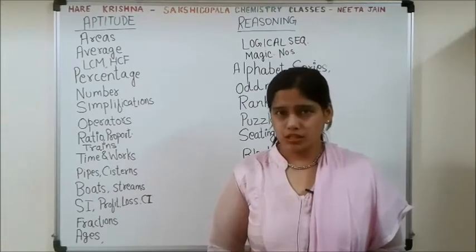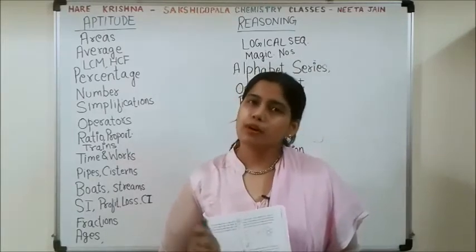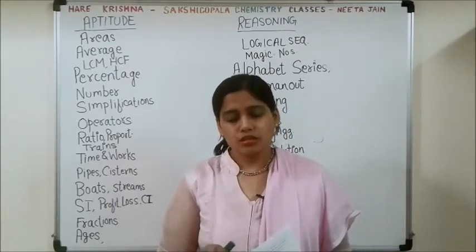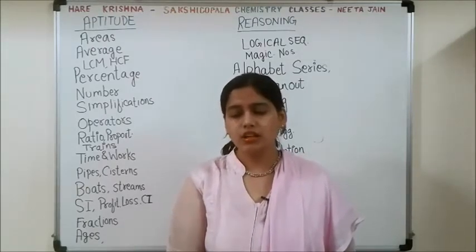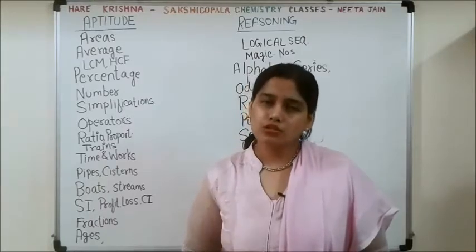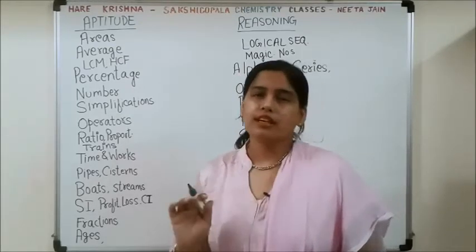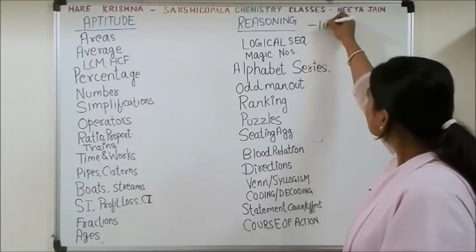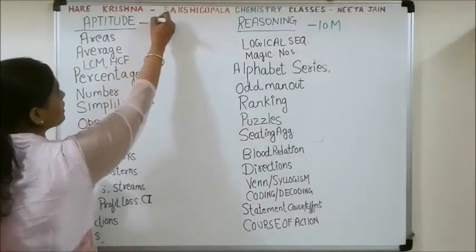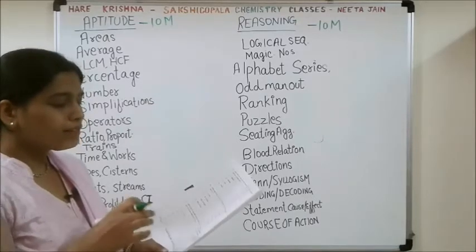Let's study the first paper — the 2017 paper. This paper I have is 7th January 2017, KVS PGT. The aptitude and reasoning portion carries a total of 20 marks — 10 marks of reasoning and 10 marks of aptitude. The first question, question number 61, is based on alphabetical series.